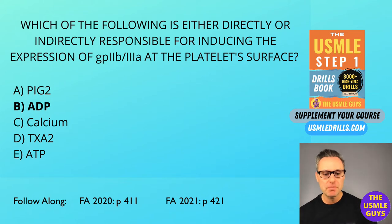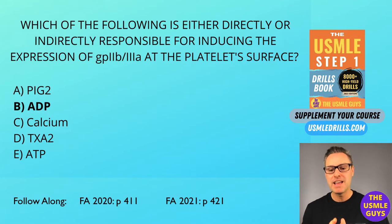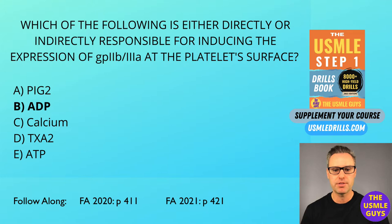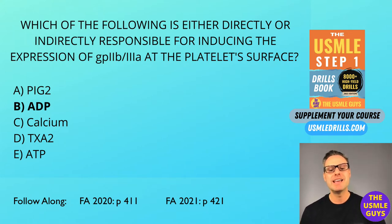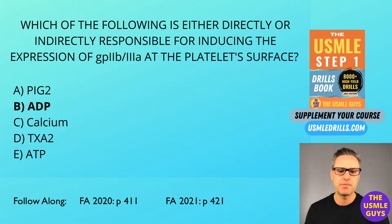Clopidogrel and ticlopidine inhibit ADP-induced expression of the GP2B3A by irreversibly blocking the P2Y12 receptor. And finally, the GP2B3A receptor is directly inhibited by abciximab, eptifibatide, and tirofiban.